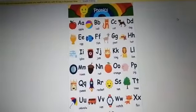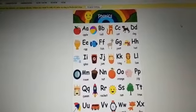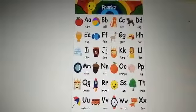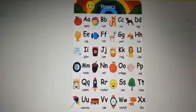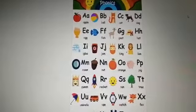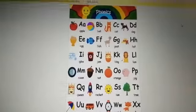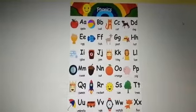A for apple, sound A. B for ball, sound B. C for cat, sound C. D for dog, sound D. E for egg, sound E. F for fish, sound F. G for goat, sound G. H for hat, sound H. I for igloo, sound I.